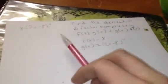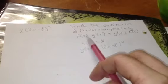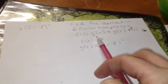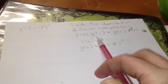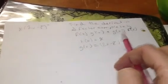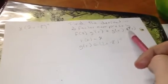With this problem, you're going to use the product rule. That's f of x times the derivative of g of x, plus g of x times the derivative of f of x.